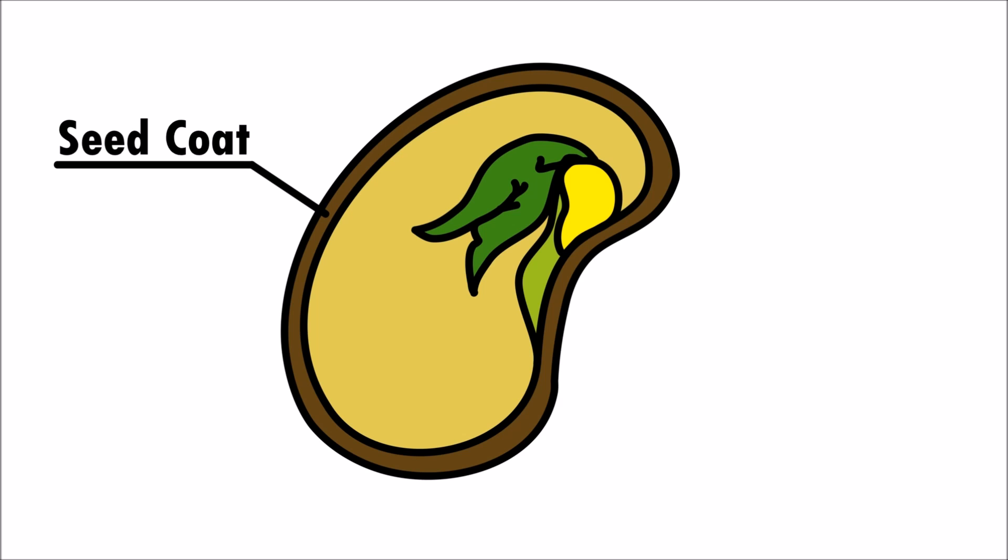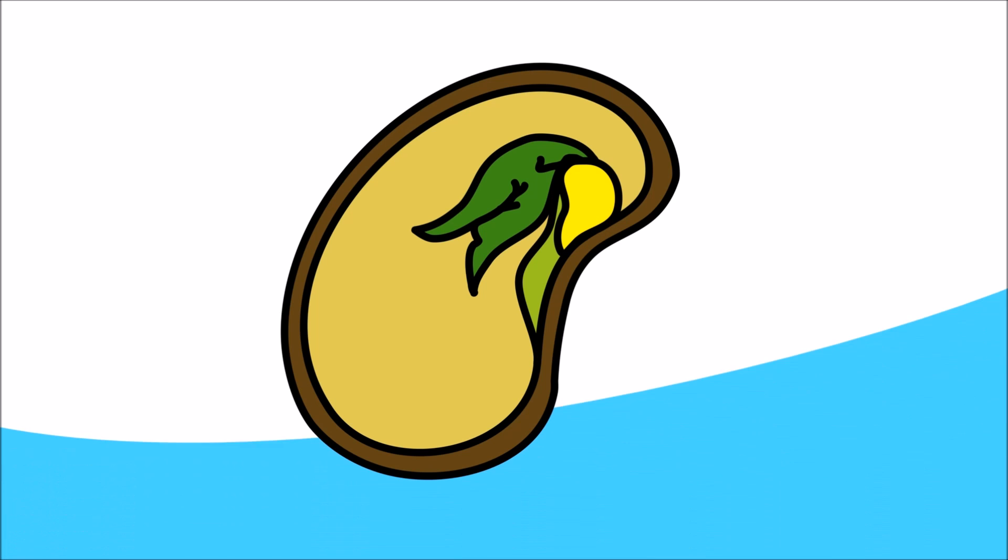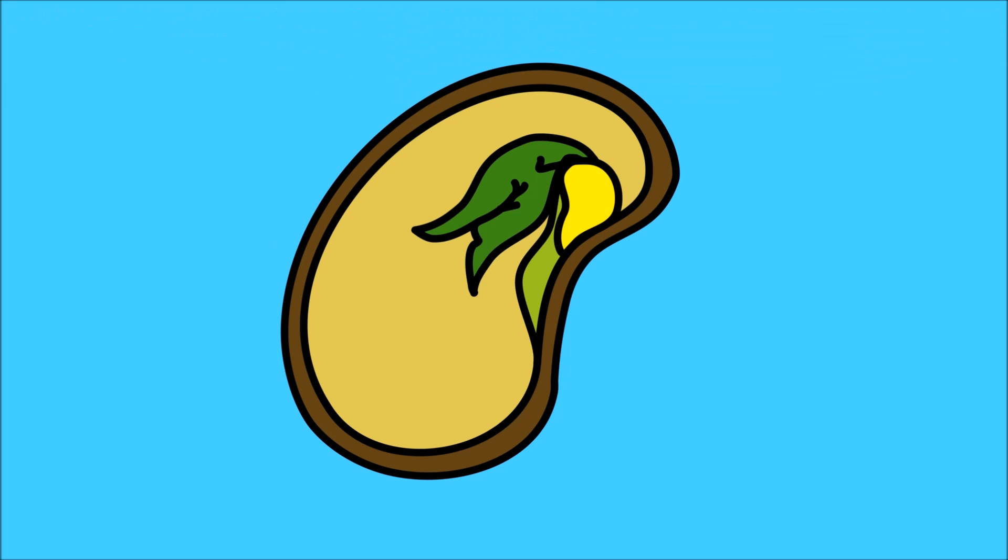The food inside the seed is called endosperm. There is also a tiny baby plant called an embryo. When water is added, the food stored inside the seed begins to convert into energy. This energy feeds the embryo, which then sends a signal for the roots to begin to sprout.